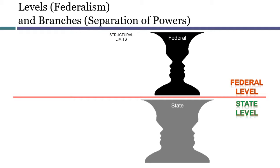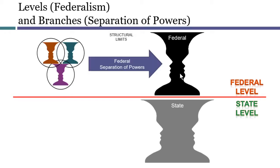To situate separation of powers into our overall framework, we can envision it as a limit on government. Even if one level of government taken as a whole might have power to do a certain thing, it could be an unconstitutional violation of separation of powers if that thing is done by officials from the wrong branch of government, or if it's done by the right branch of government but in a way that unduly interferes with the other branches.